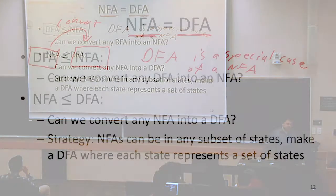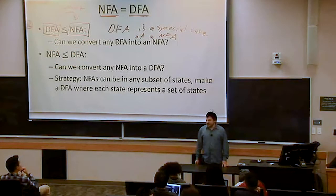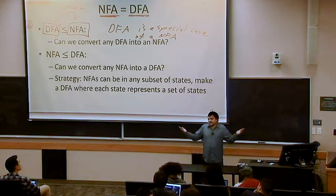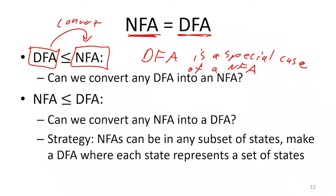It's kind of like saying, can you convert any circuit that uses ORs and NOTs into one that uses ANDs, ORs, and NOTs? Well, it already is — because if we were allowed to use ORs and NOTs before, and now you're letting me use ANDs, I didn't have to use the ANDs for it to be an AND-OR-NOT circuit. So every DFA is already an NFA, and we know that NFAs are at least as powerful as DFAs.